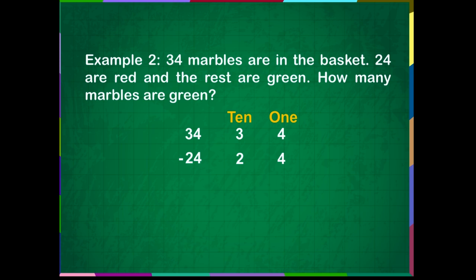First, we subtract the ones place. 4 minus 4 is 0. Now, we will subtract the tens place. 3 minus 2 is equal to 1.